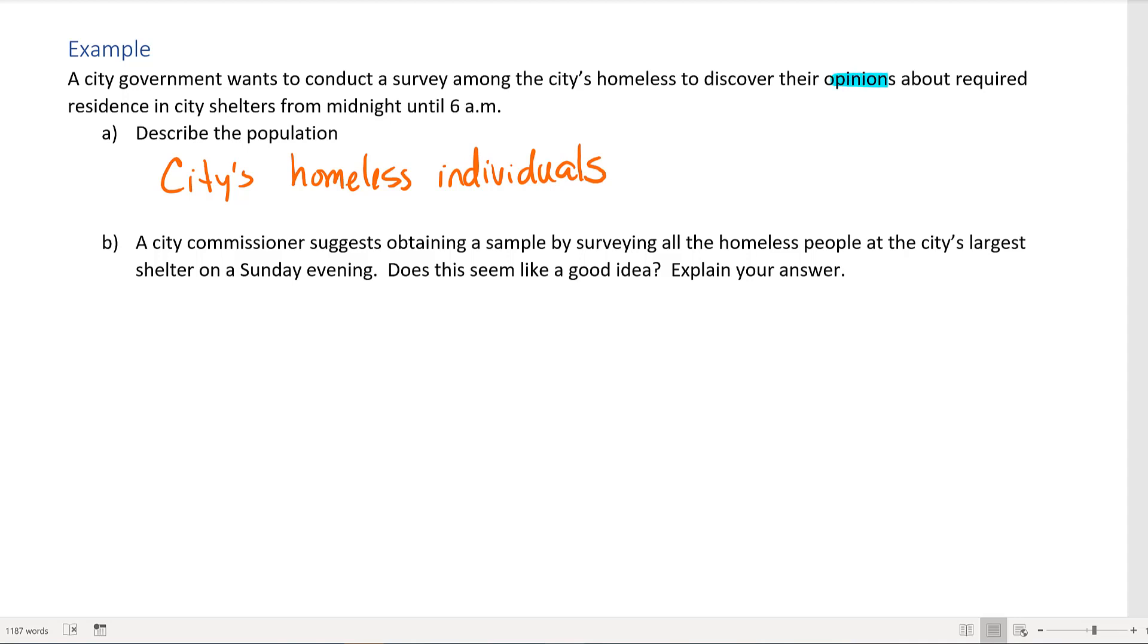The government wants to get opinions about required residences in city shelters in the evening hours from midnight until 6 a.m. If you only survey people that are already at a shelter in the evening, what do you think their opinions might be?